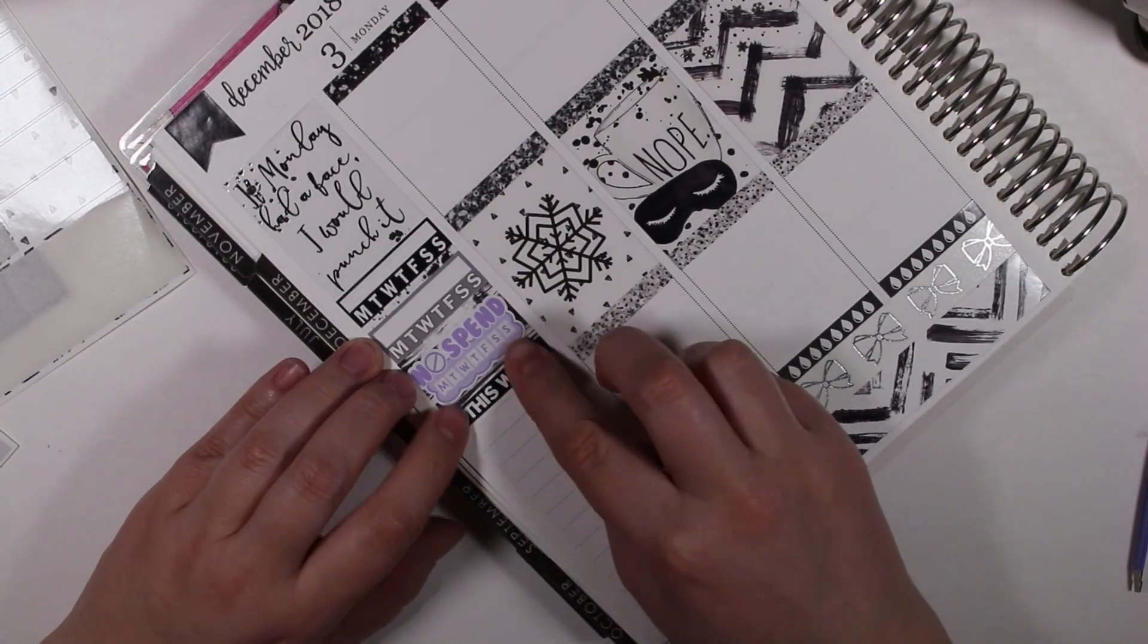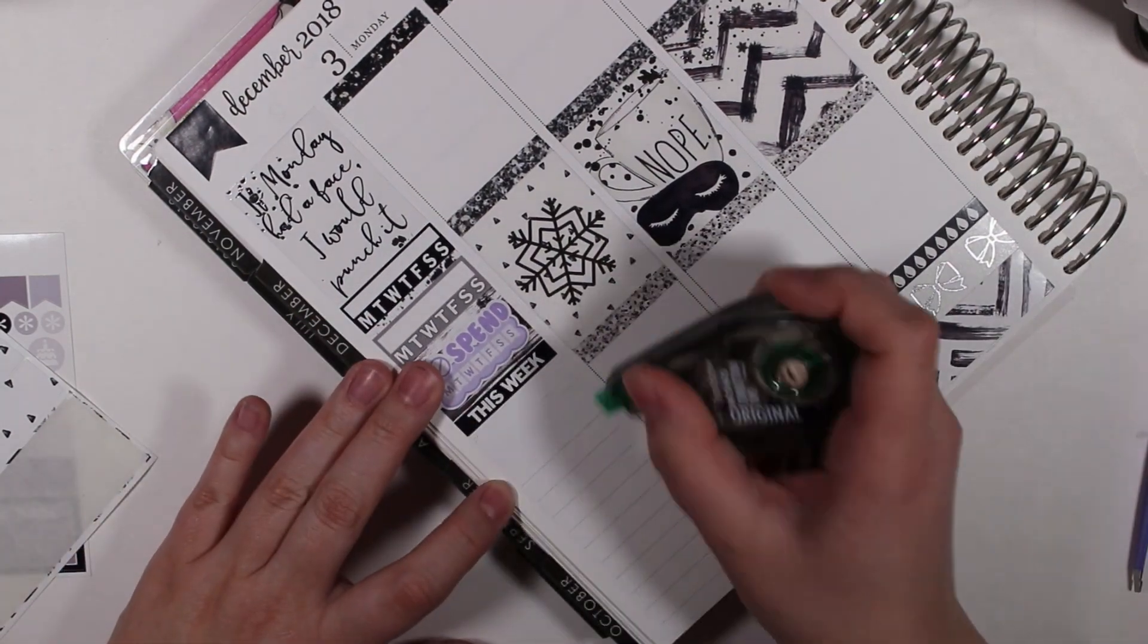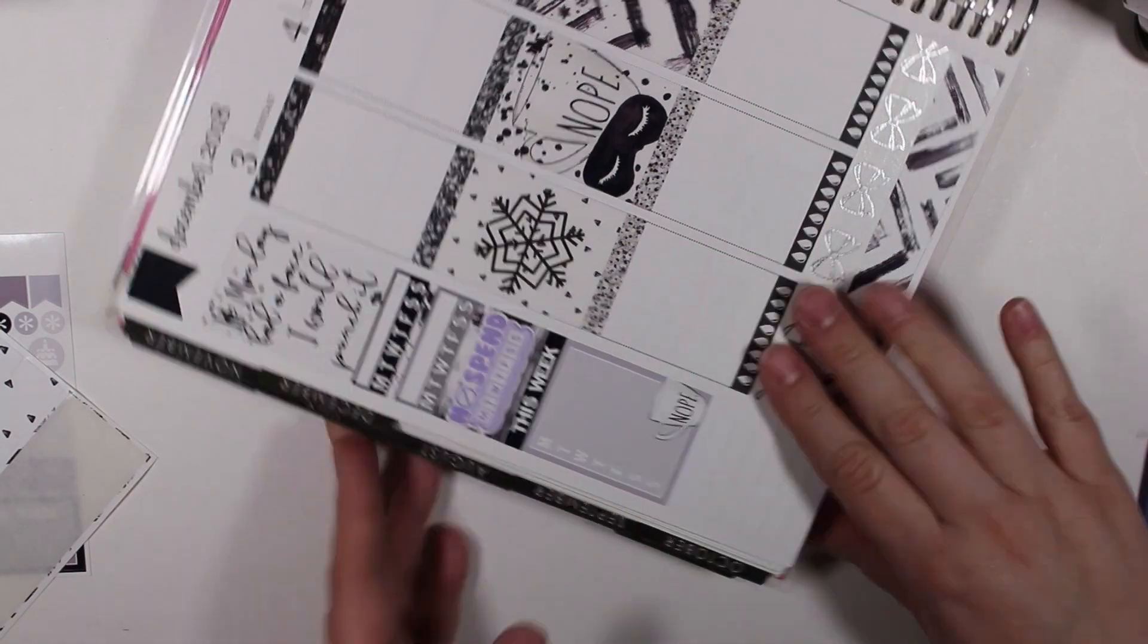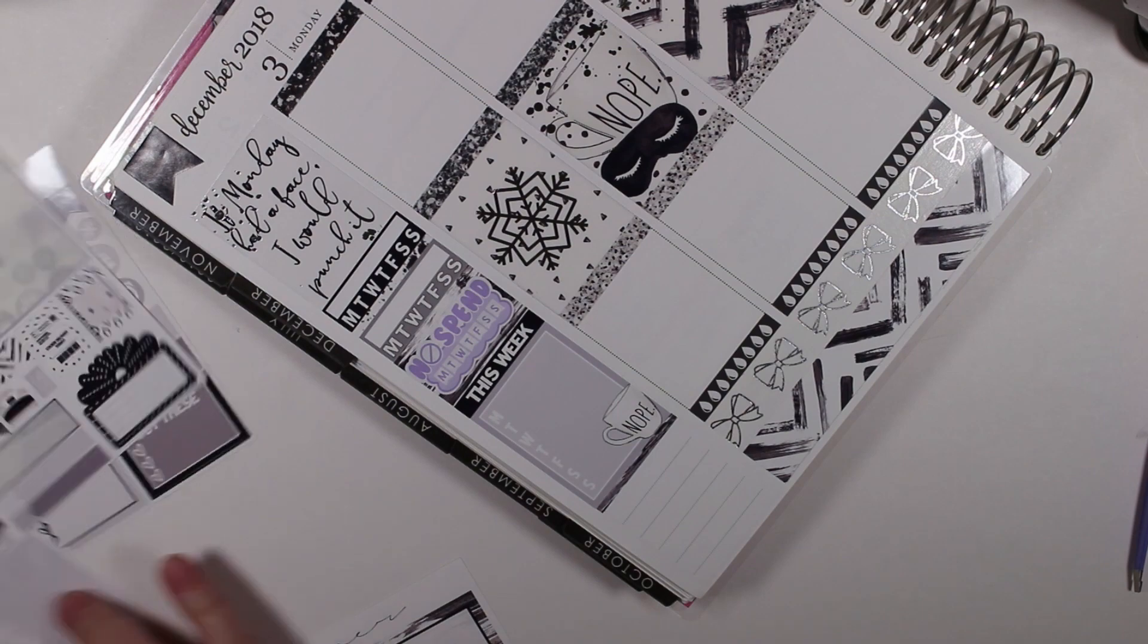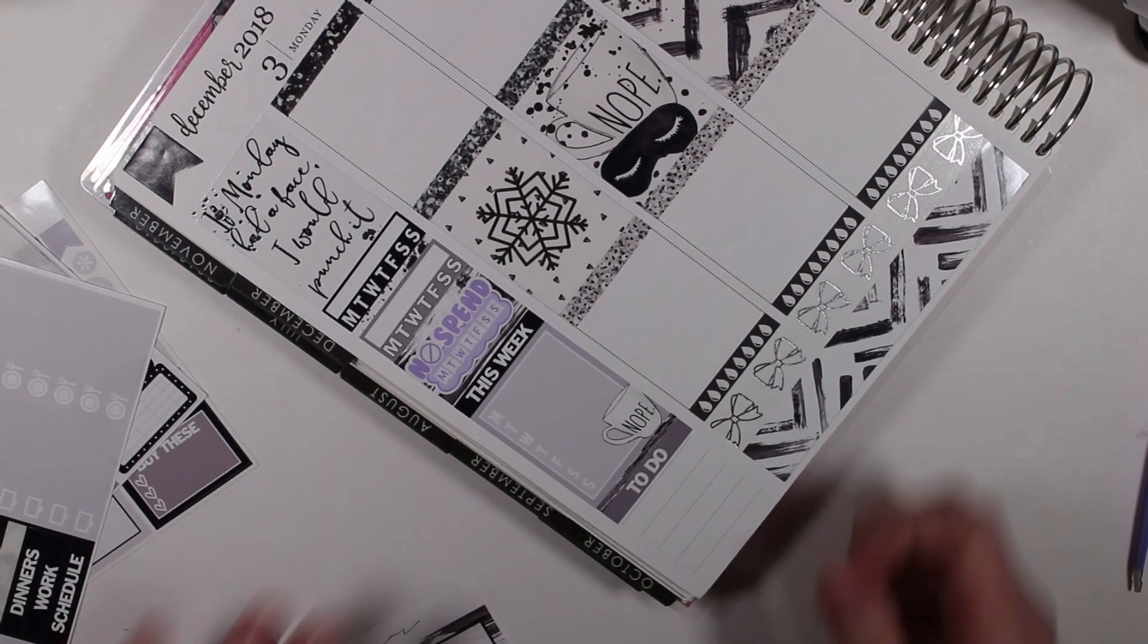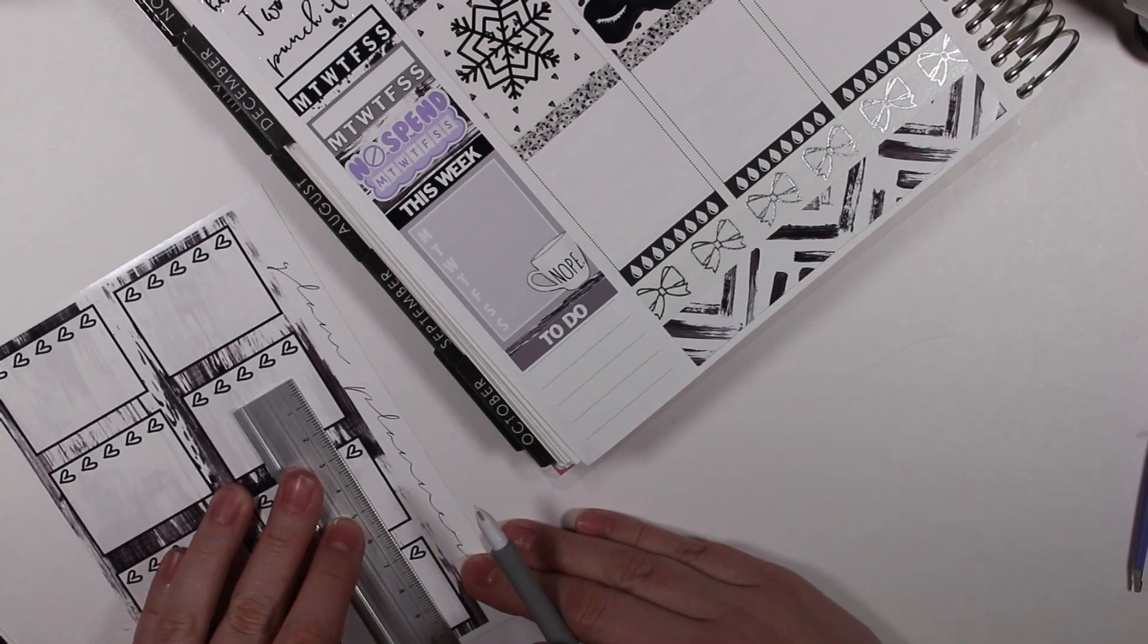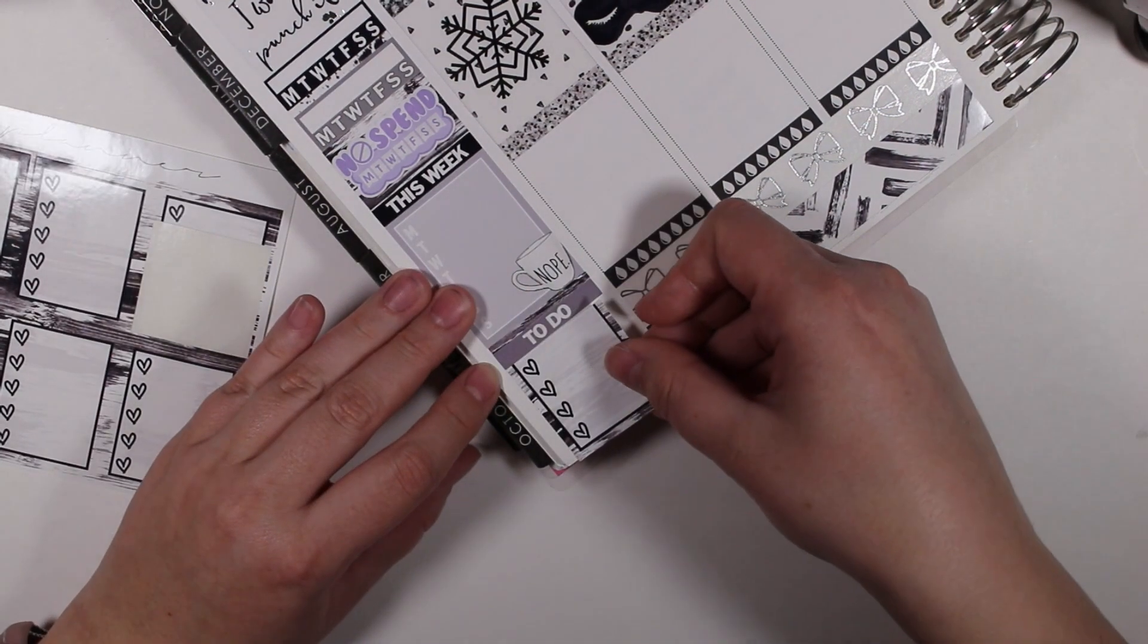I then put down a this week header with a weekly box just to track my daily steps because that's something I like to track in my planner. See how many days this week I hit my 10,000 step goal. I think it was three, I'm pretty sure that's a record for me for recent history which is sad.